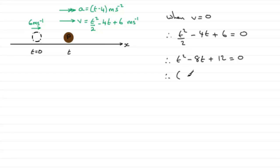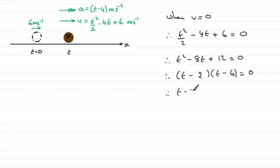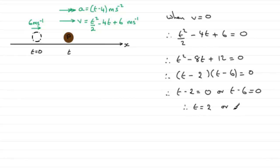This will factorize — we've got two brackets, each with a T, and then minus 2 and minus 6. Check that and you will get that. So each factor could equal 0: T minus 2 equals 0 or T minus 6 equals 0. Adding 2 gives T equals 2, and adding 6 gives T equals 6. So our particle is at instantaneous rest at 2 and 6 seconds.